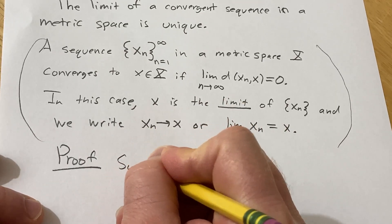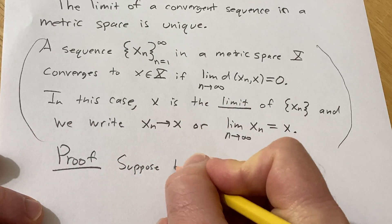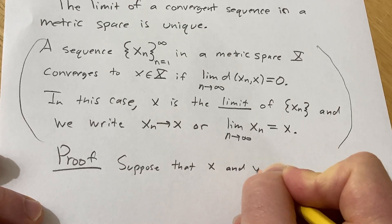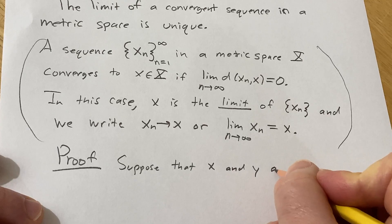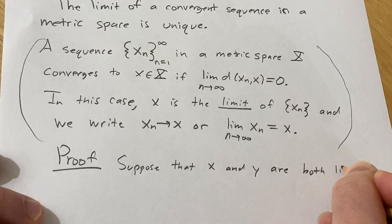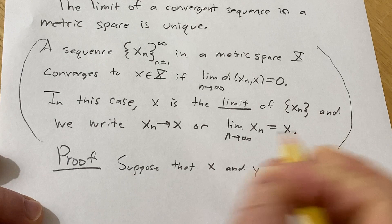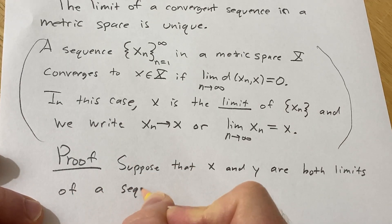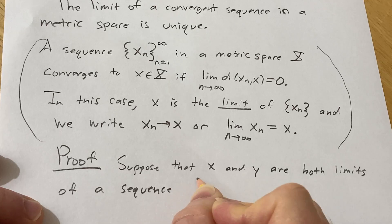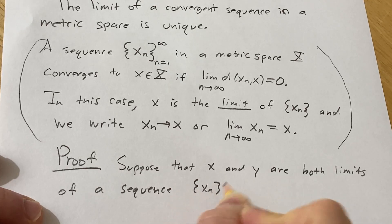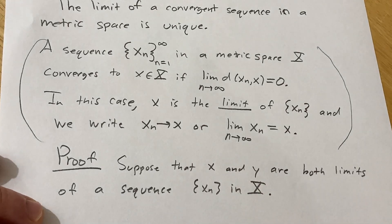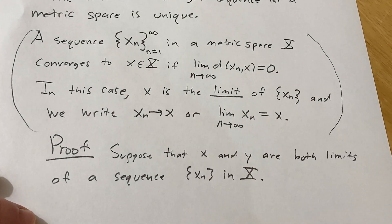So suppose that x and y are both limits of a sequence x sub n in capital X. So they're both limits of a sequence and we have to show that they're the same.